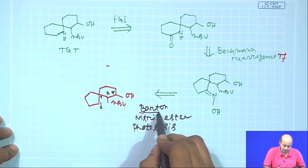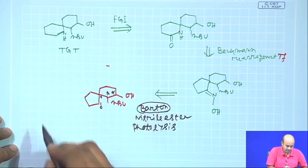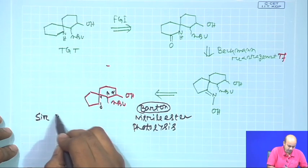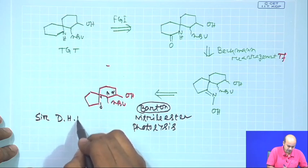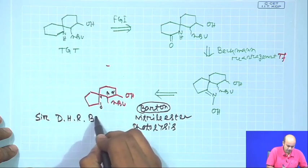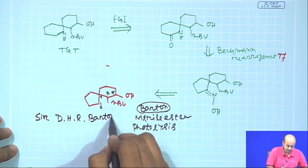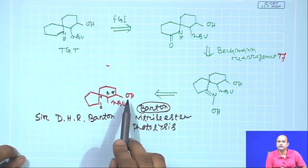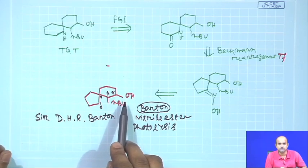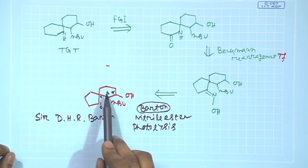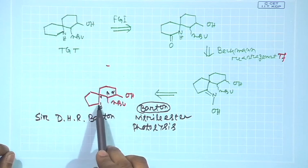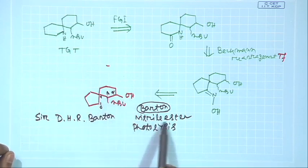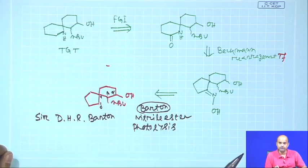Barton nitrile ester photolysis was first invented by Sir Derek Barton, who got the Nobel Prize in chemistry working on the conformational aspects of several steroid molecules. This reaction is basically a remote functionalization of a molecule - specifically a delta functionalization. Nitrile ester means that you need to have a nitrile ester of the corresponding alcohol.